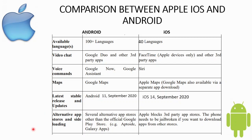For alternative app stores, Android supports sideloading and the Google Play Store, and different manufacturers may include their own app stores. iOS, however, only officially supports the Apple App Store. Access to third-party app stores on iOS requires the phone to be jailbroken.